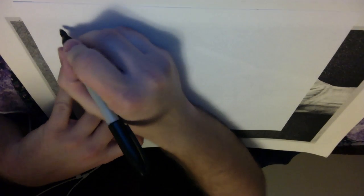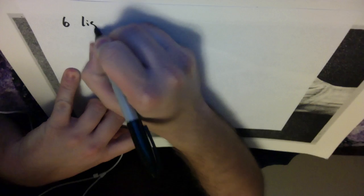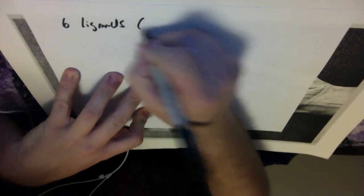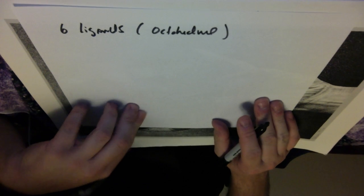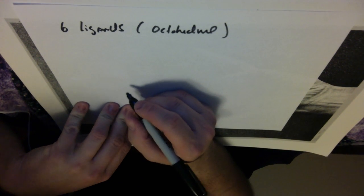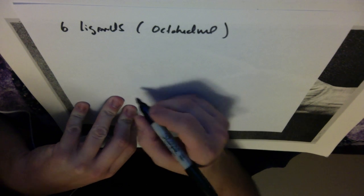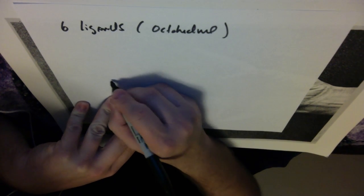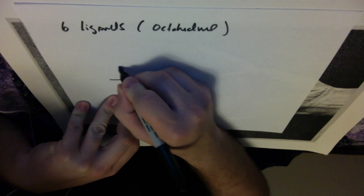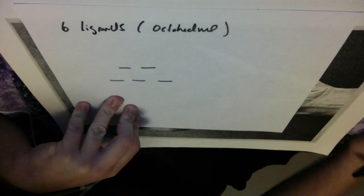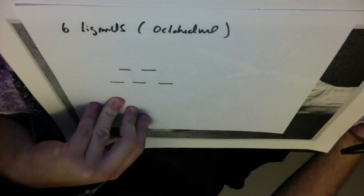And when we look at the octahedral geometry, so six ligands is octahedral. And remember when we talked about the typical splitting that occurs, where you get three orbitals at lower energy and two d orbitals at higher energy. That's your typical splitting.